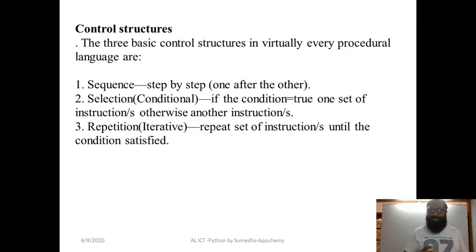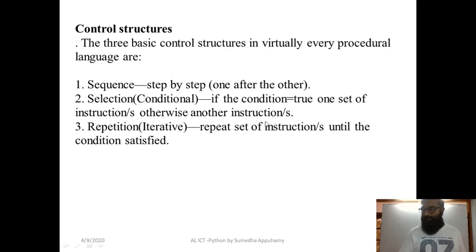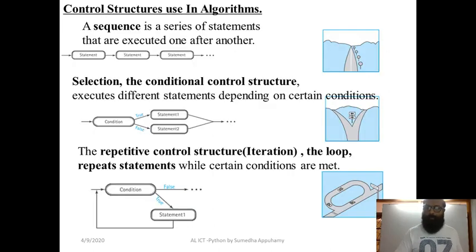As discussed in the first slide, there are three basic control structures. The first is sequence — step-by-step proceeding where the steps execute one after the other. The second is selection, which is conditional: if a condition is satisfied, you do one set of instructions; otherwise, you do another set. The third is repetition: while a given condition is satisfied, you repeat the given set of instructions again and again.